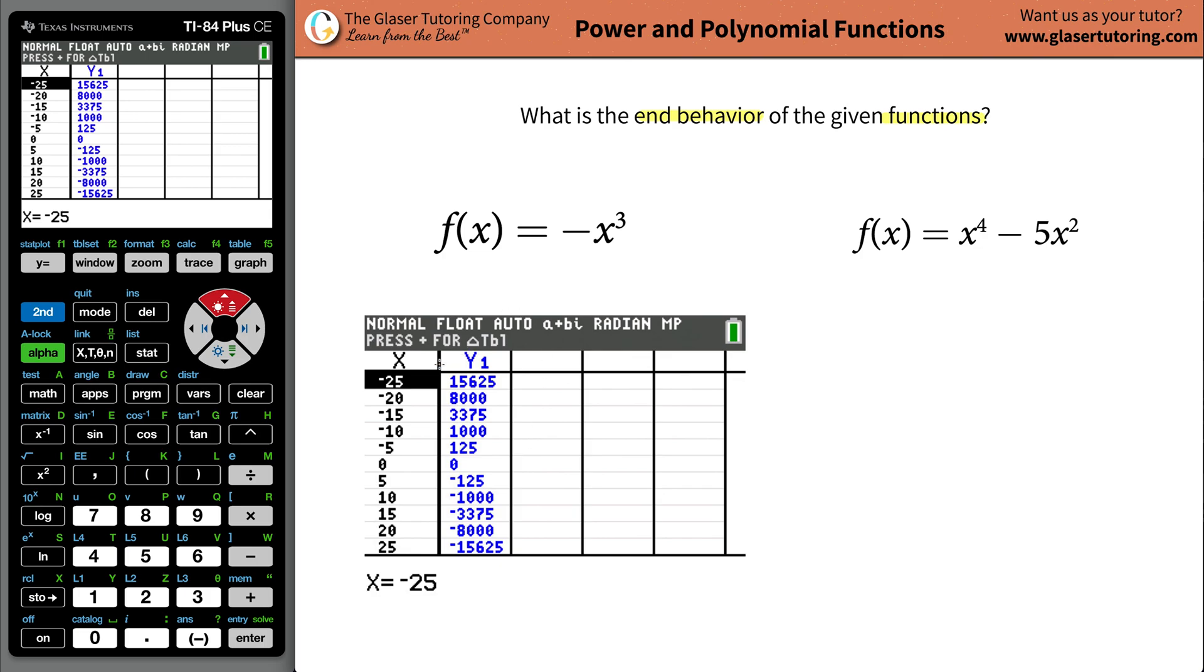So therefore that would kind of be the one answer to determine the end behavior. So in other words, as x goes to negative infinity, the y value, and you can also substitute in the f of x value, they're both saying the same thing, the f of x value will go to positive infinity.